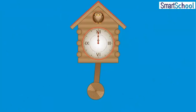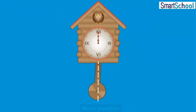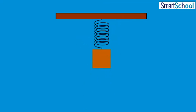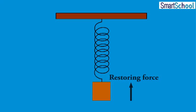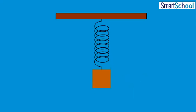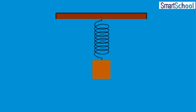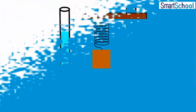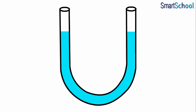The motion of the pendulum of a wall clock is an example of oscillatory motion as it moves to and fro about the mean position. Also, the motion of a mass on a spring when it is subject to the linear elastic restoring force is also an oscillatory motion. Another example of oscillatory motion is the motion of liquid contained in a U-tube when liquid in one of its limbs is compressed and released.